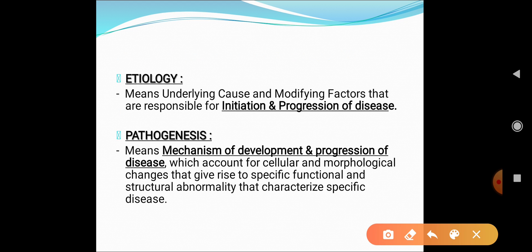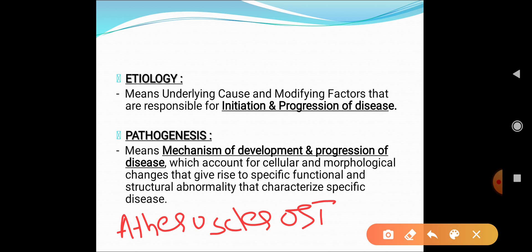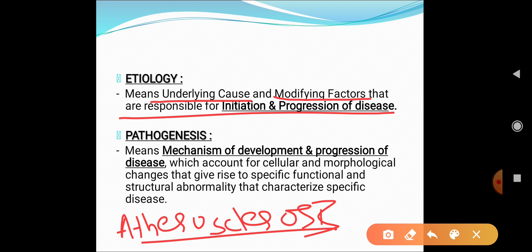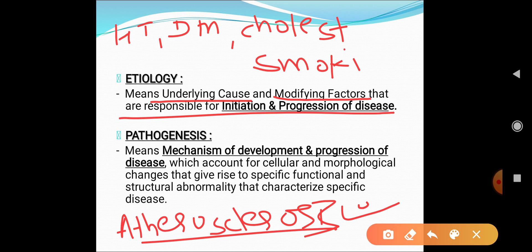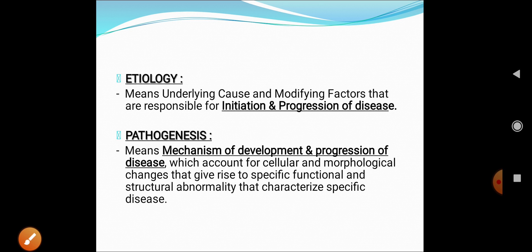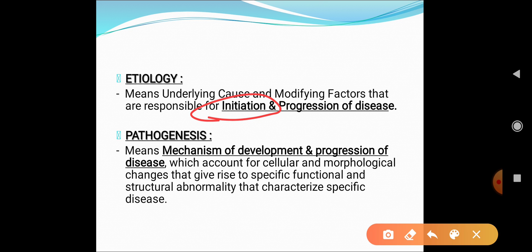What do you mean by etiology? Taking atherosclerosis as a prototypic example — etiology means the underlying cause or modifying factors responsible for the initiation and progression of disease. As far as atherosclerosis is concerned, the etiological factors include hypertension, diabetes, high cholesterol level, smoking, and hyperhomocysteinemia. These factors initiate and progress the disease.